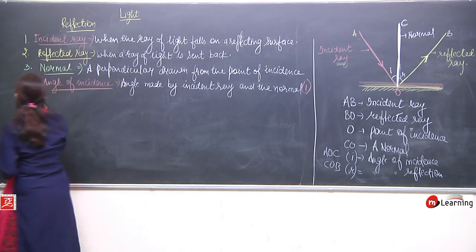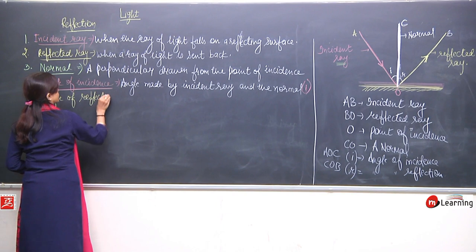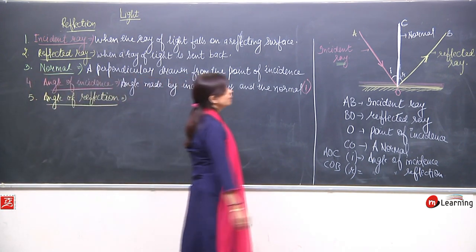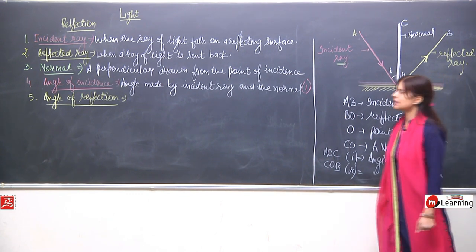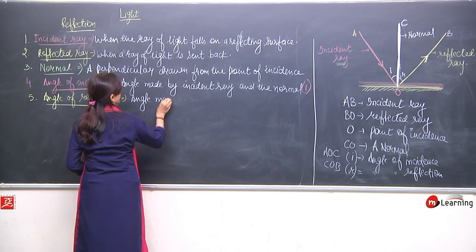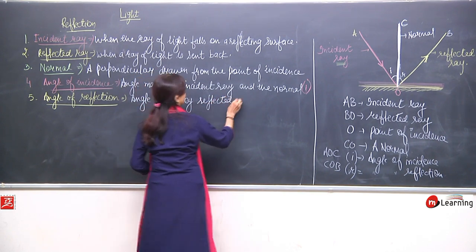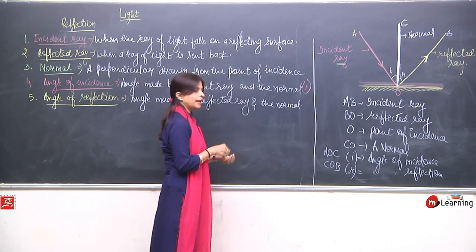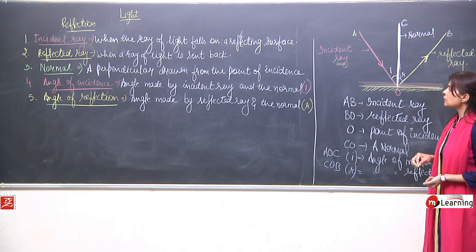Now the fifth term: angle of reflection. What does this mean? The angle made between the reflected ray and the normal. We all know it is denoted by small r. This angle can be denoted as small r.